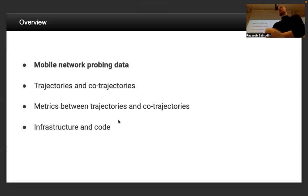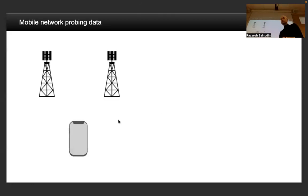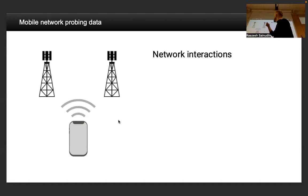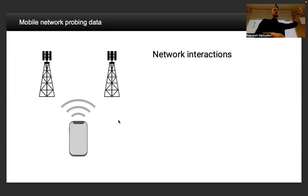Let's begin with the mobile network probing data. We all have mobile devices — sometimes phones, sometimes routers in our homes, sometimes Wi-Fi devices on buses. So it's not necessarily a one-to-one thing between a person and a device. These devices interact with all the antennas we see on housetops or out in the countryside.